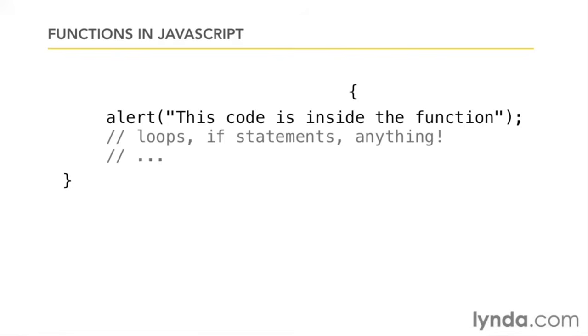And whatever's inside that code block is called the body of the function. Now we need to give it a name. So we first add the word function in JavaScript. And because we could have dozens or hundreds of them, we give it a unique name. And that part, like variables, is up to us.